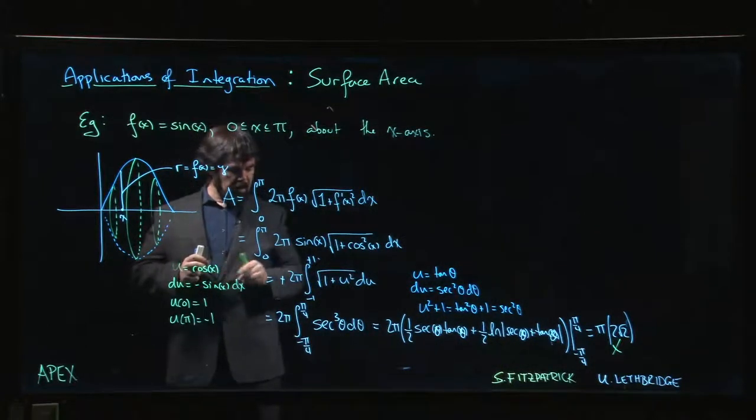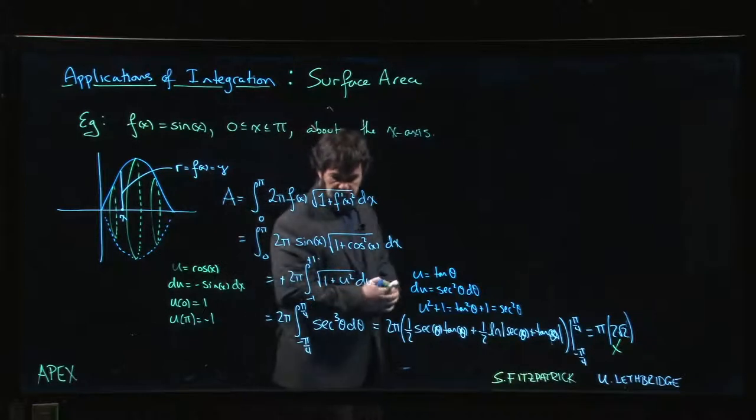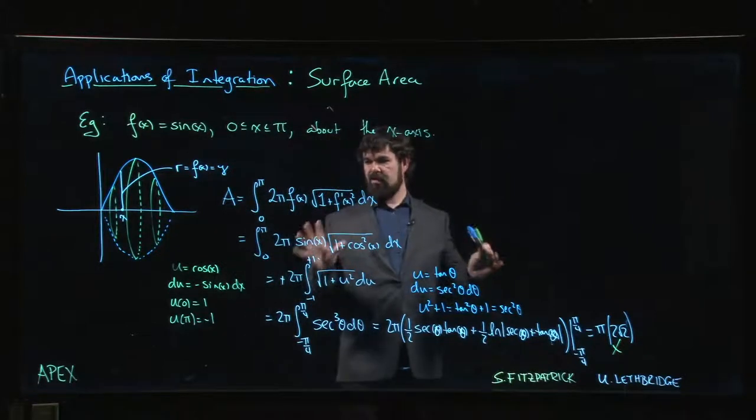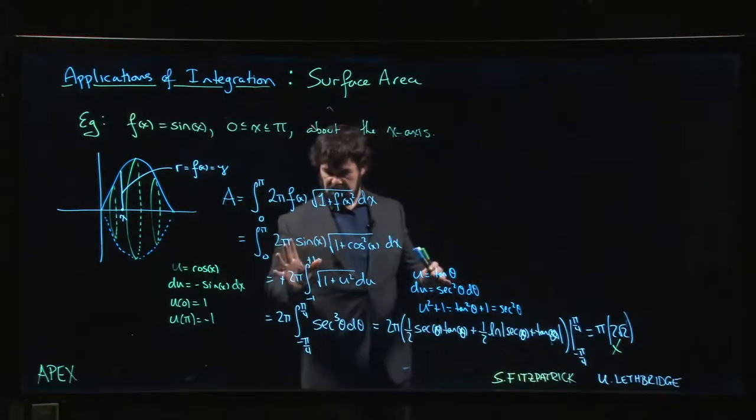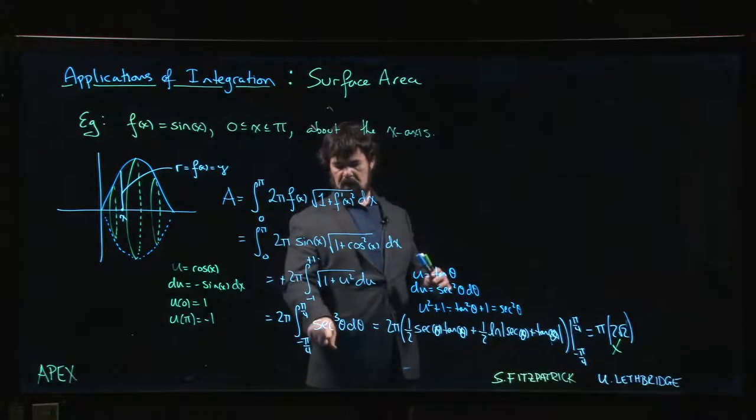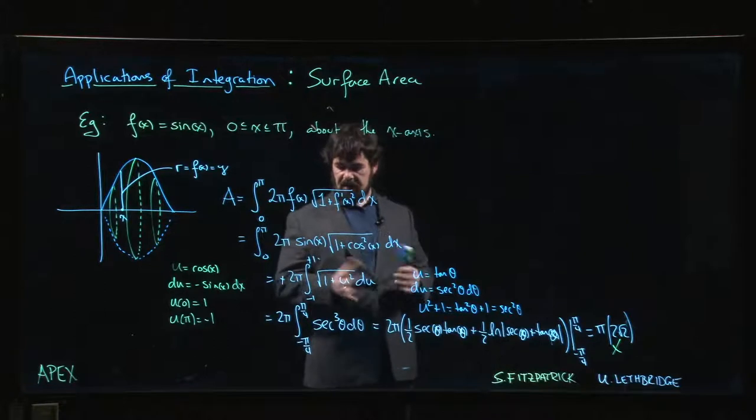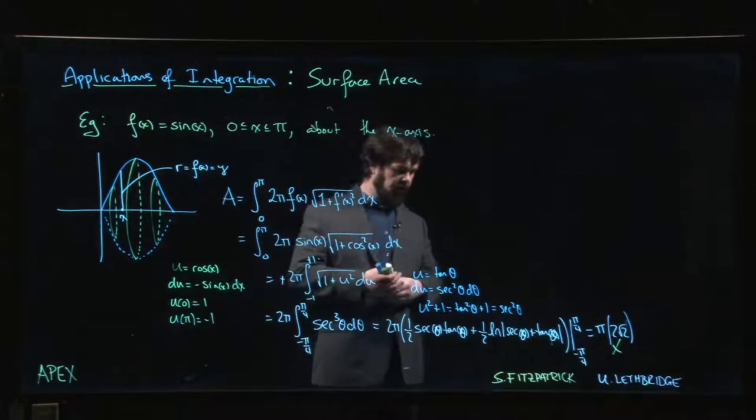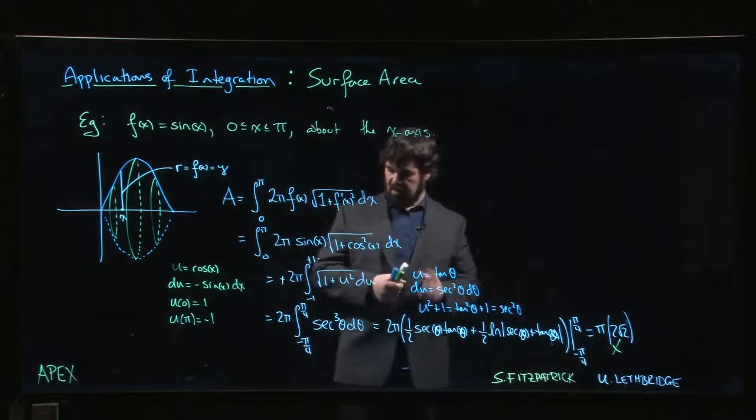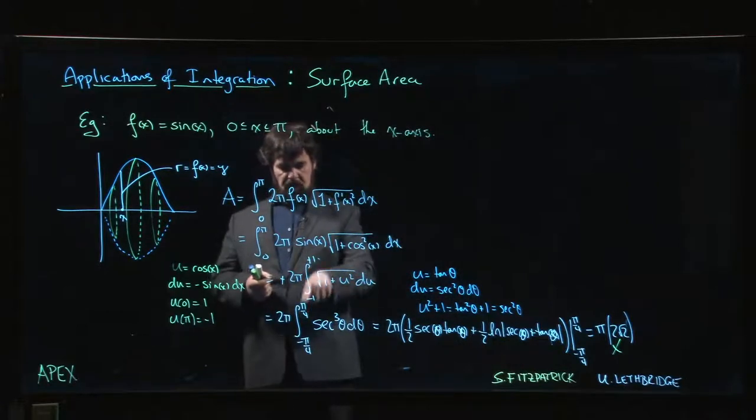There are a couple of ways that you could simplify things here. Once we reach this point, we're integrating an even function. That could simplify our lives a little bit because instead of going from minus one to one, we can go from zero to one and double it using symmetry.